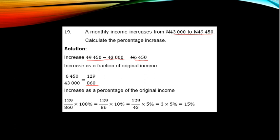To get the percentage increase, you multiply this fraction by 100. With further reduction, you get 15%. So the increment is 15%. In other words, 15% of 43,000 was calculated and added to it to give 49,450.